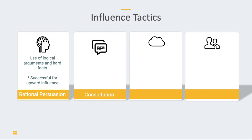The second influence tactic is called consultation. This occurs when the person trying to influence someone else goes to that person and asks them how they think a task should be carried out. For example, if your organization wants to implement a dress code policy, the leader would go to employees and ask them about the dress code — how they feel about it, what kind of uniform they'd be comfortable wearing. Asking individuals for their participation and insight is really helpful in getting them to eventually buy in and change their behaviors in the long run.